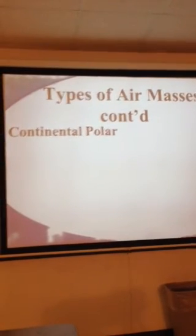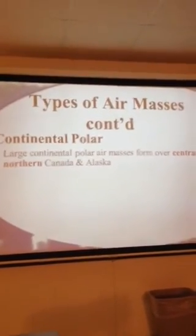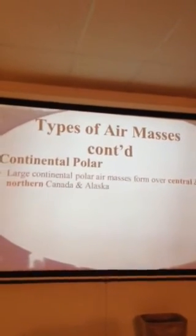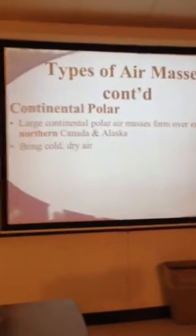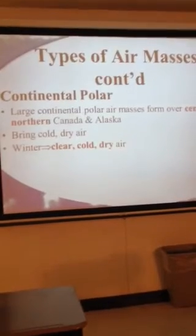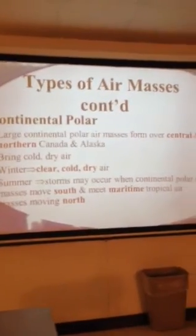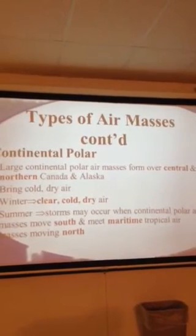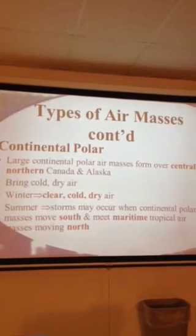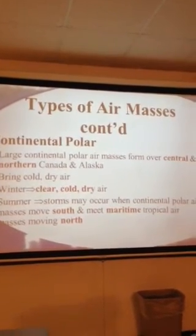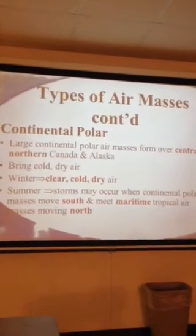Continental polar is the cold air mass that comes from land — for the United States this would come from Canada. It is the large continental polar air mass that forms over central and northern Alaska and Canada, and brings cold dry air. In winter it brings clear, cold, dry air. In summer, storms may occur when continental polar air masses move south and meet maritime tropical air masses moving north, bringing storms to the United States in summertime.